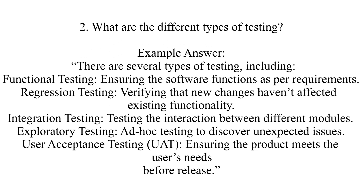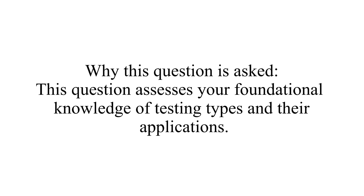Question two: What are the different types of testing? There are several types of testing, including functional testing — ensuring the software functions as per requirements; regression testing — verifying that new changes have not affected existing functionality; integration testing — testing the interaction between different modules; exploratory testing — ad hoc testing to discover unexpected issues; and user acceptance testing, or UAT — ensuring the product meets users' needs before release. This question assesses your foundational knowledge of testing types and their applications.